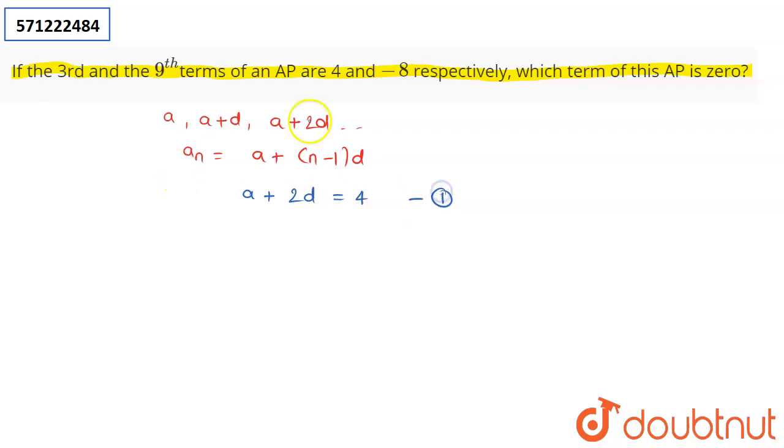And I am given that my ninth term is -8, so a + (n equals 9, that is) 8d equals -8. This is our second equation.